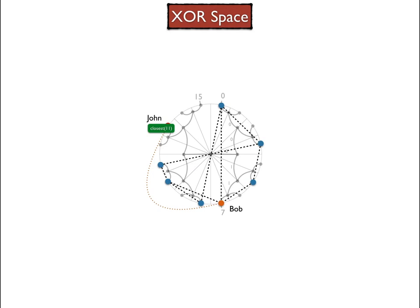John now has the connection information to establish a direct connection to its closest node. The relay through Bob is not needed anymore since John now has an actual connection to a node of the network. From that point on, John participates in the operations of the network and is a full participant. In the course of operations, John might learn of other nodes and will establish connections with them.